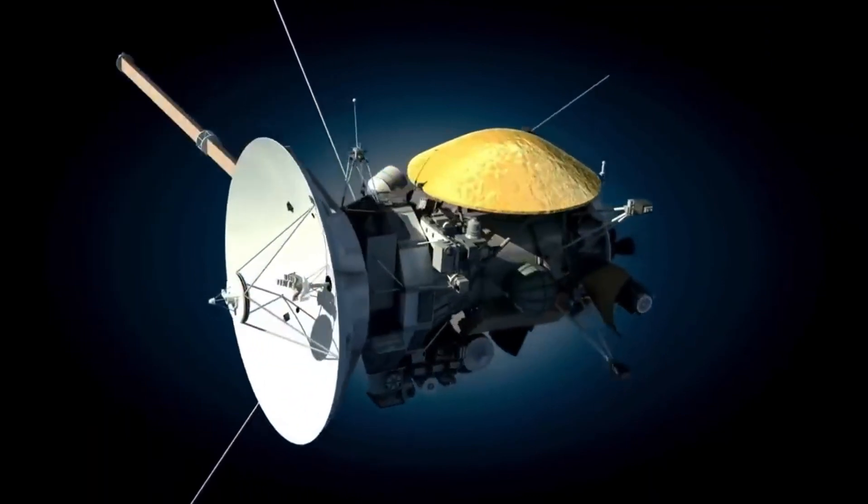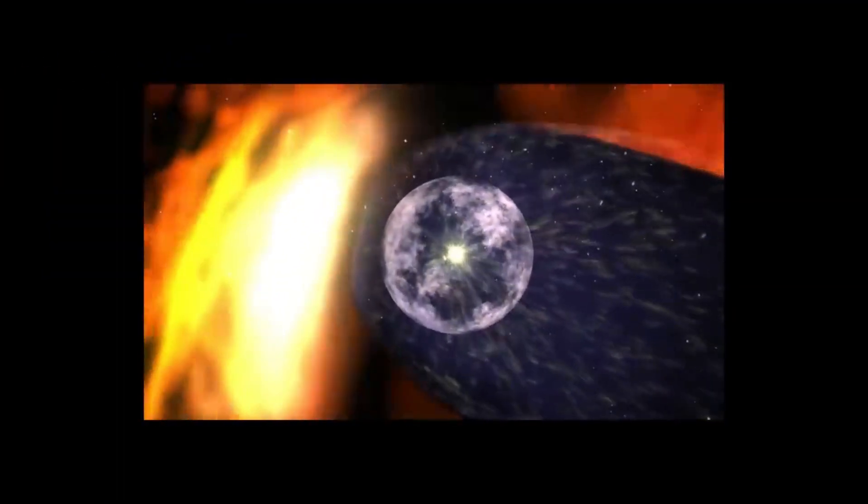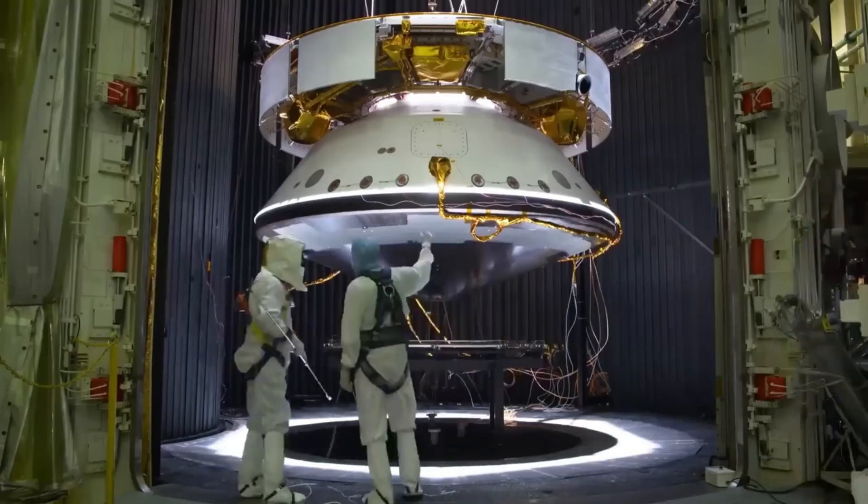During its encounter with Neptune, Voyager 2 also achieved an extraordinary feat, recording a wind-rich atmosphere and providing unique insights into a faraway celestial body, particularly Neptune's largest moon, Triton.